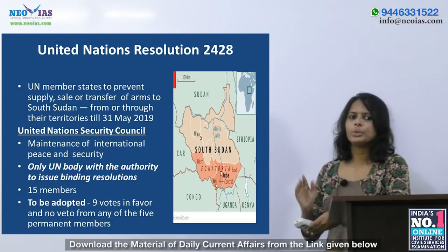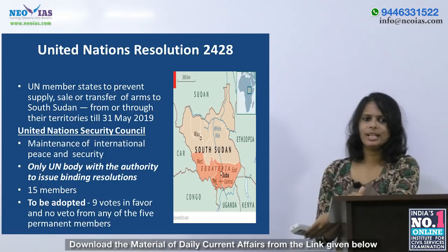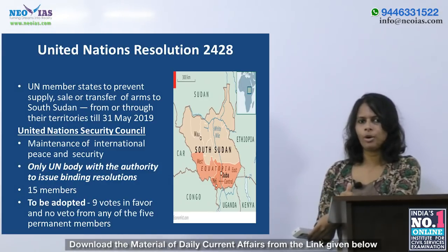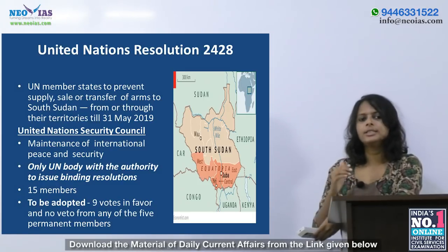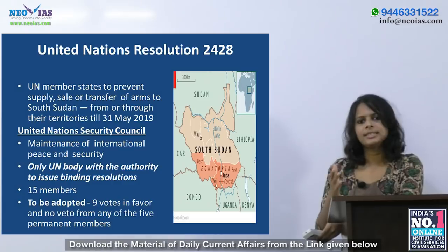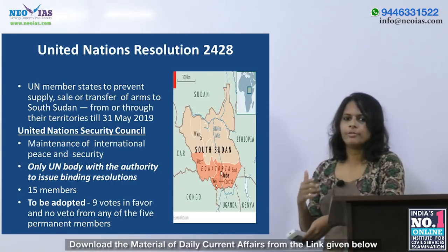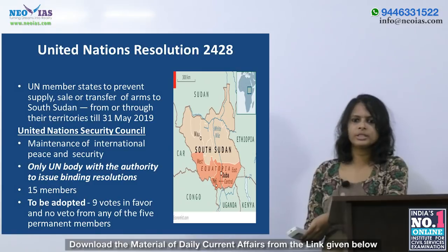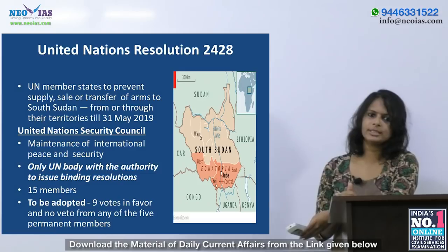The first topic for the day is United Nations Resolution 2428. The United Nations Security Council has adopted Resolution 2428 to impose an arms embargo on South Sudan. This resolution calls upon all UN Member States to prevent supply, sale or transfer of arms to South Sudan through or from their territories till 31st May 2019. It also withholds training, technical and financial assistance related to military activities or materials.